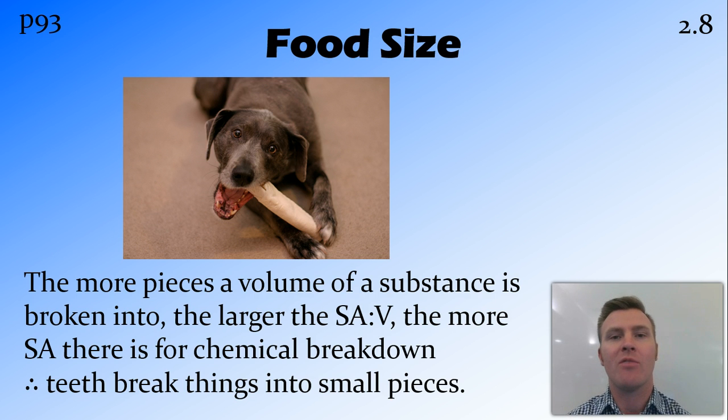Another place where surface area to volume ratio comes up—and this is getting into more of the chemical side of it—but when chemical breakdown of a substance occurs, it occurs at the active site, which is the surface. So the more surface area for a fixed volume, the easier it is for chemical breakdown to occur. What this means is that when you chew something, your teeth break that thing down into very small pieces, increasing the surface area but keeping the volume the same. Therefore, there's more sites for that chemical digestion reaction to occur, and it occurs more efficiently.